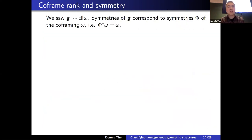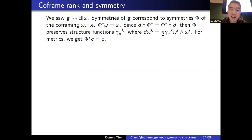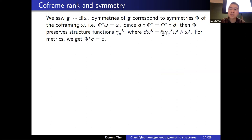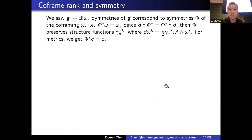To summarize: starting from a metric, we arrived at a unique canonical co-framing upstairs on the orthonormal frame bundle. Symmetries of g induce symmetries of the co-framing. Because pullbacks commute with d, any symmetry upstairs preserves the corresponding structure functions. In general, if we have a co-framing ω with components ωₖ, we take their exterior derivatives, write them in terms of the co-framing itself, and the coefficients are the structure functions. For us, the only potentially non-constant structure function is c — the Gaussian curvature.